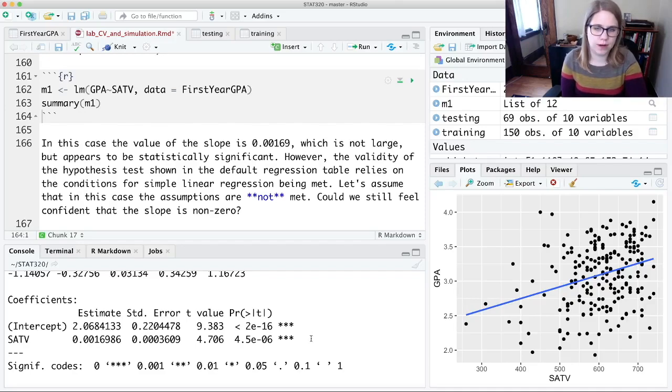And let's assume right now that those conditions are not met, and then we couldn't rely on this P value. So then the question is, what could we do instead? And the answer is, we could use randomization.